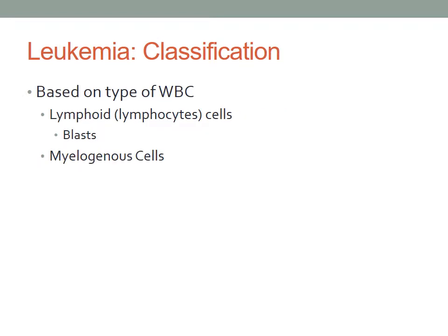The second type of classification is by the type of white blood cell affected. In lymphocytic leukemia, this type affects the lymphoid cells which form the lymphatic tissue. A single lymphoid cell clones itself and produces blasts or immature white blood cells. These white blood cells never mature. Cloning of this immature cell becomes uncontrollable and fills up the bone marrow with blasts, which eventually get pushed into the circulation. This process is called leukocytosis.